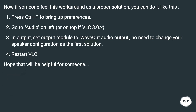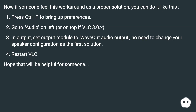Now if someone feels this workaround is a proper solution, you can do it like this. Press CTRL+P to bring up preferences. Go to audio on the left, or on top if VLC 3.0.x. In output, set the output module to WAVOUT audio output — no need to change your speaker configuration as with the first solution. Restart VLC. Hope that will be helpful for someone.